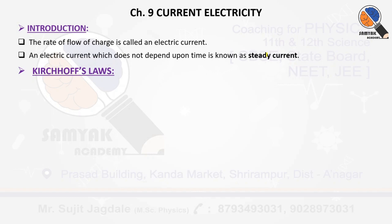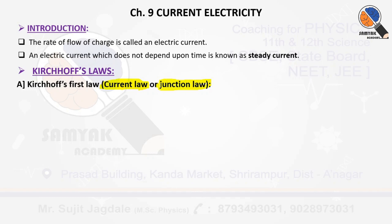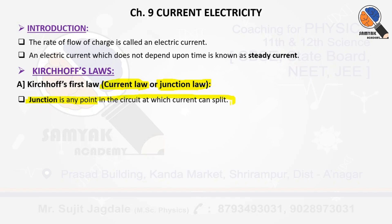There are two laws: KCL and KVL. What is KCL? What is KVL? Kirchhoff's current law is referred to as a current law or junction law, abbreviated as KCL. A junction is a single point at which current will split.